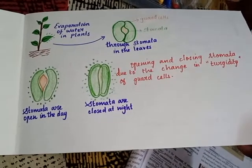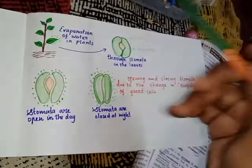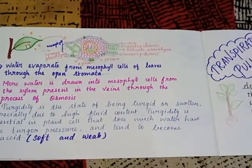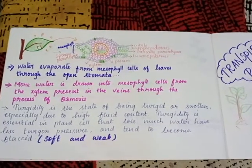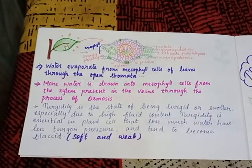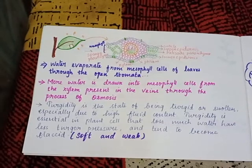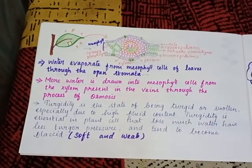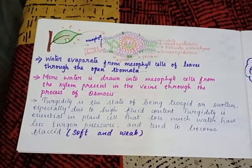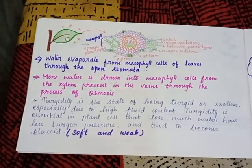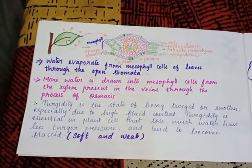This is the structure of stomata. This is the open stomata and this is the closed stomata. When water evaporates from the mesophyll cell of the leaf through the open stomata, more water is drawn into the mesophyll cells from the xylem present in the veins through the process of osmosis. Turgidity is the state of being turgid or swollen, especially due to high fluid content. Turgidity is essential in plant cells that lost much water; they have less turgor pressure and tend to become flaccid. Flaccid means soft and weak.